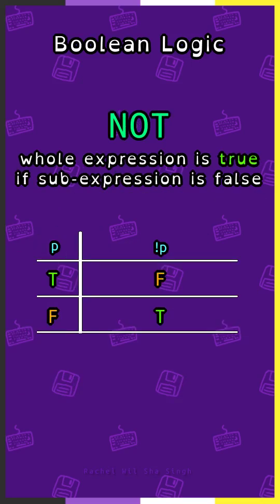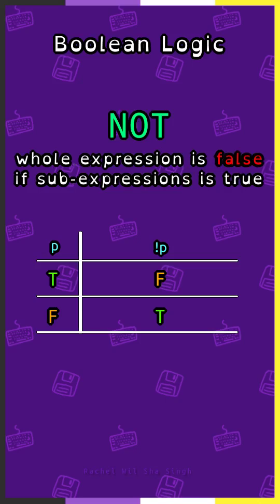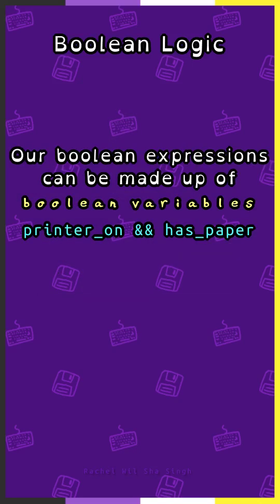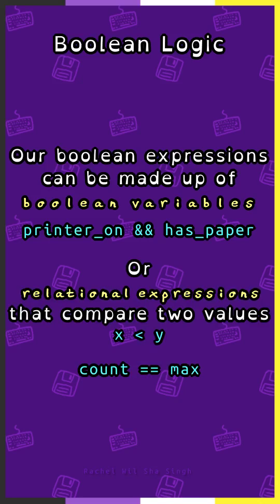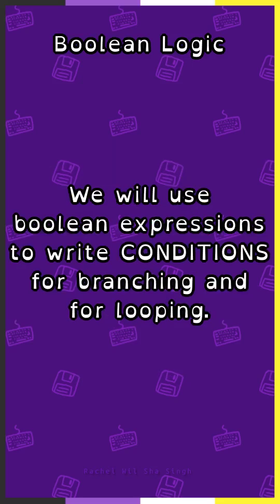With the NOT operator, the whole expression is true if the sub-expression is false, and false if the sub-expression is true. Our Boolean expressions can be made up of Boolean variables like printer_on and has_paper, or relational expressions that compare two values like x is less than y or count is equal to max. We will use Boolean expressions to write conditions for branching and looping.